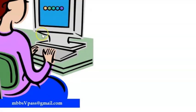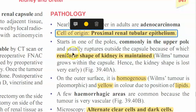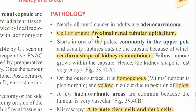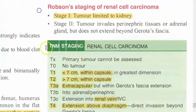The cell of origin is the proximal renal tubular epithelium - specifically the proximal convoluted tubule. Microscopically, alternate clear cells and dark cells are seen. Now the focus moves to staging, investigations, and management.